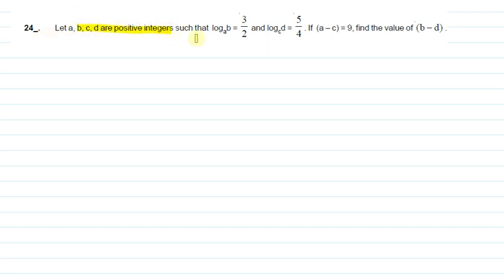Let A, B, C, D be positive integers such that log base a of b equals 3/2 and log base c of d equals 5/4. If a minus c is equal to 9, find the value of b minus d.